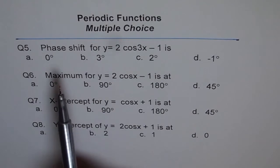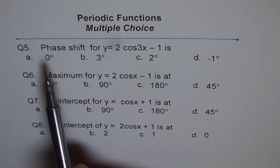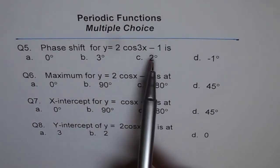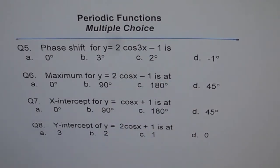Here is question 5. Try to understand as I read so that you can also make a choice and answer the question. Phase shift for y equals 2 cos 3x minus 1 is how many degrees? 0 degrees, 3 degrees, 2 degrees or minus 1 degree? Take your time to make a choice.